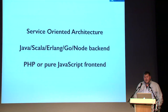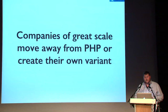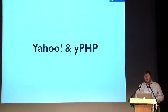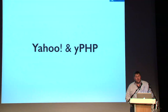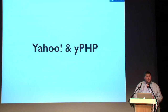A very common approach at companies like Yahoo is to have Java, Scala, Erlang, Go, or Node on the back end and PHP as the glue on the front end. More people are now doing heavy work in Angular or Ember and using a JSON REST API for data. Companies at great scale tend to move away from PHP or create their own variant. Yahoo has their own suite of utilities prefixed with 'Y' — code that was previously in PHP gets moved to PHP extensions written in C or C++ for computationally intensive operations.